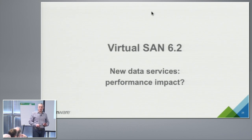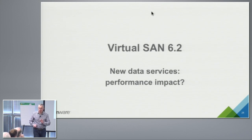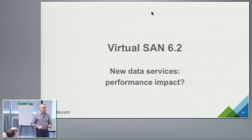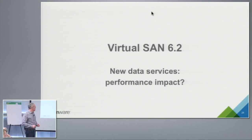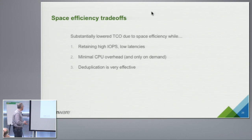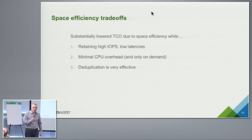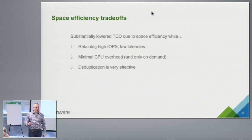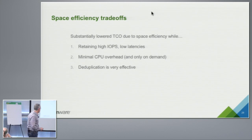What is the performance impact of all those space efficiency features? By performance, I don't mean only IOPS and latencies, but also CPU utilization — what is the impact on your consolidation ratios? At a very high level, the summary is that we have substantially reduced TCO while retaining high IOPS and low latencies with minimal CPU overhead, and you only use that extra CPU when you need it.